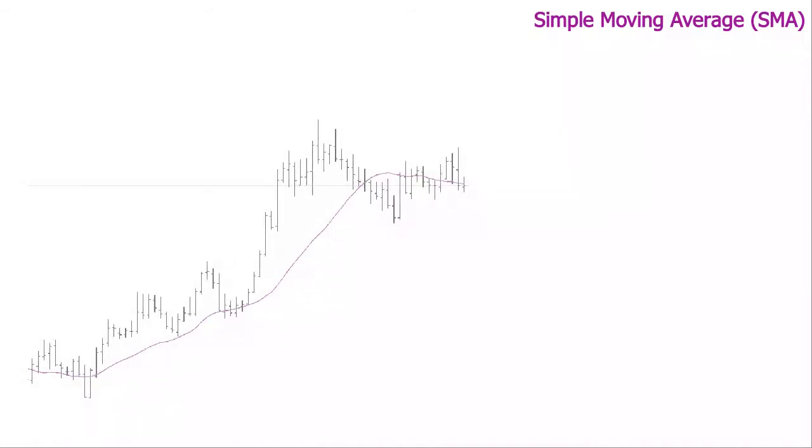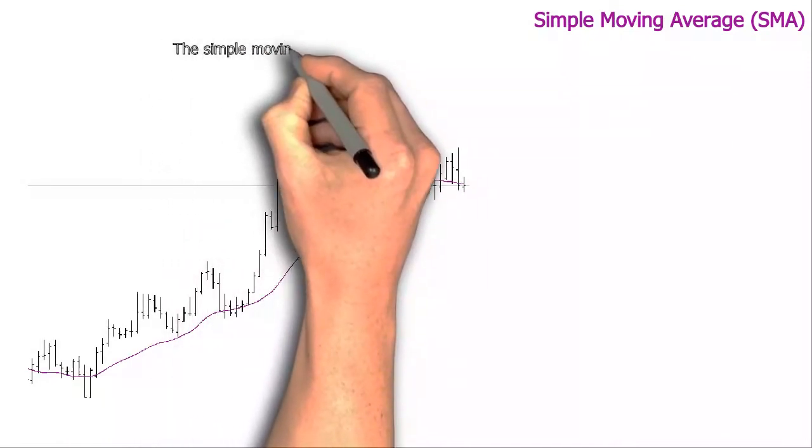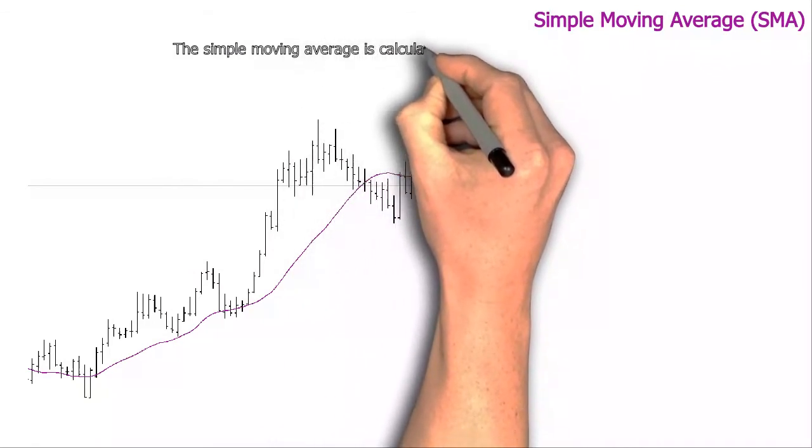For example, the 20 Periods Moving Average would average price levels for the last 20 periods of the chart. On this following bar, the Simple Moving Average would include the last bar of the chart,